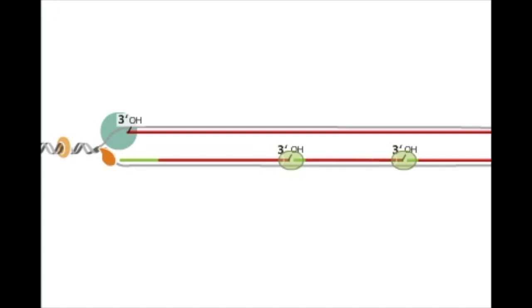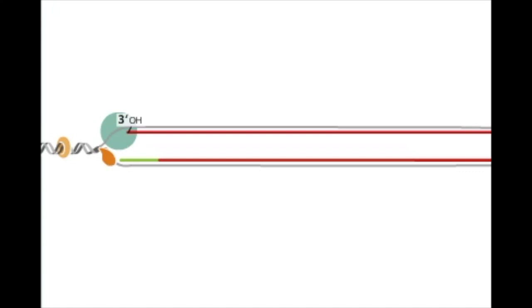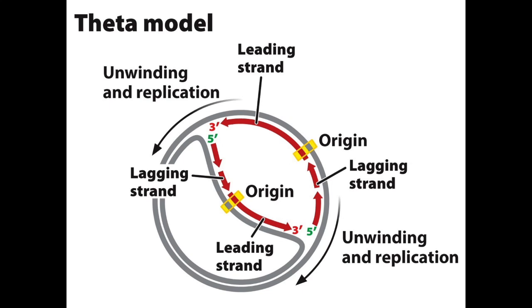DNA polymerase 1 cuts out the RNA primer and uses 5' to 3' polymerase activity to replace the RNA nucleotides with DNA nucleotides. DNA ligase seals the nick between the DNA added by DNA polymerase 3 and that added by DNA polymerase 1 without adding another nucleotide to the strand. Through these steps, the replication machinery uses the parental DNA as a template to synthesize the leading and lagging strands.